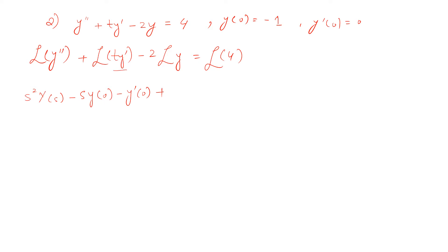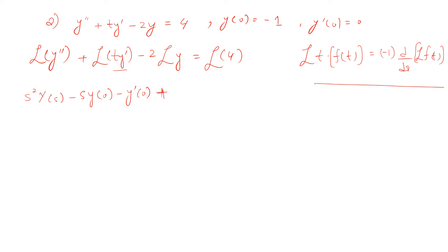When the independent variable t is multiplied by a function of t, we use the property: L{t·f(t)} = −(d/ds)·L{f(t)}. Using this property, L{t·y'} = −(d/ds)·L{y'} = −(d/ds)[s·Y(s) − y(0)].